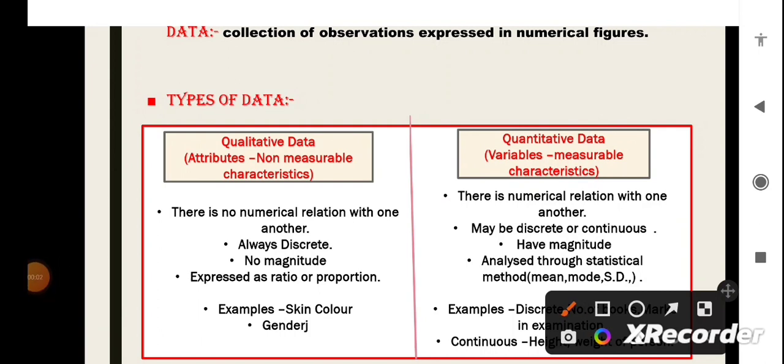Now, let's see the classification of data. If we talk in a broad way, then there are two types of data. First one is qualitative data, which can also be known as non-measurable characteristics or attributes. Second one is quantitative data, which is known as measurable characteristics or variables. The qualitative data are those in which there is no numerical relation with one another. So, they have no magnitude and these are always discrete, which means that they can only take a finite number of values or a fixed value.